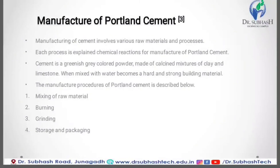Now the most important topic is the manufacturing of cement. The manufacturing of cement involves various raw materials and processes. There are two main raw materials for manufacturing of cement: first is calcareous material, and second is argillaceous material. Each process is explained with chemical reactions for manufacturing of Portland cement.